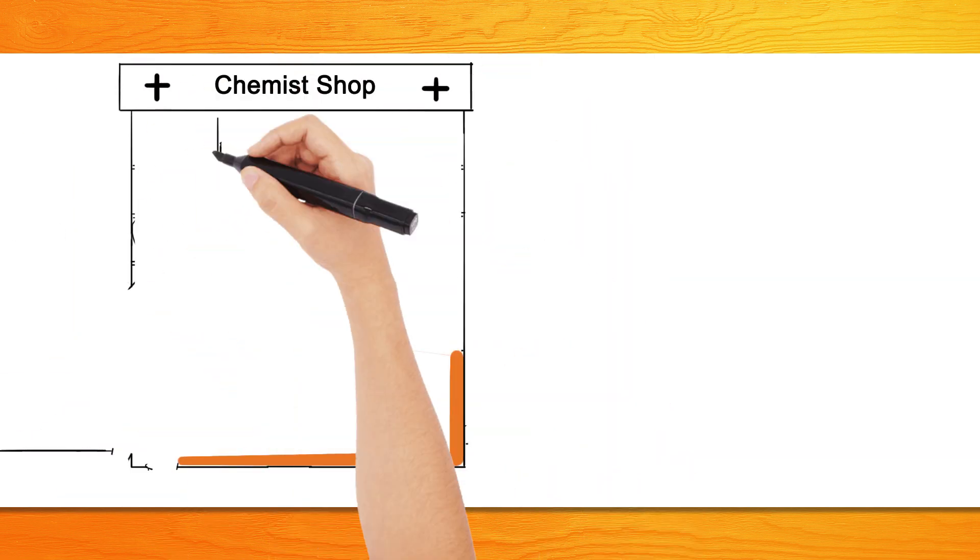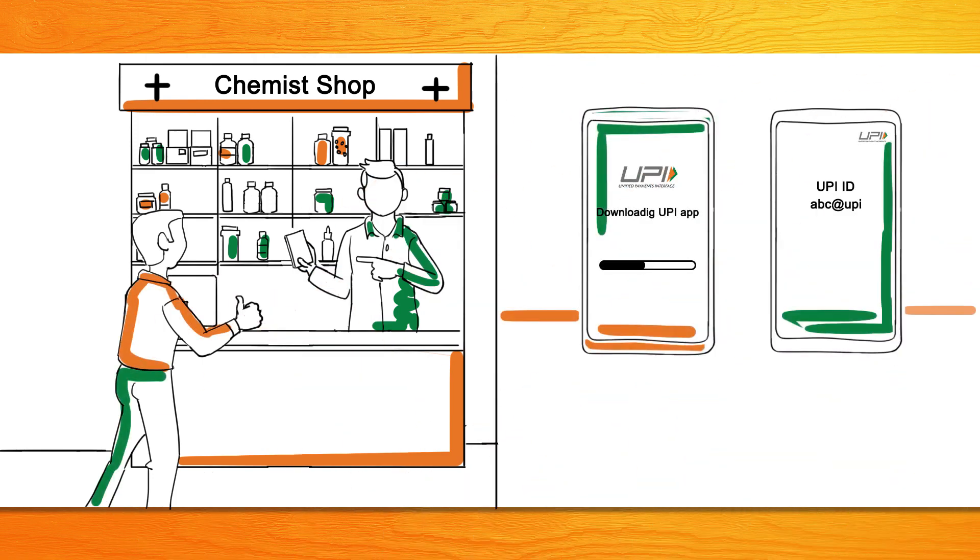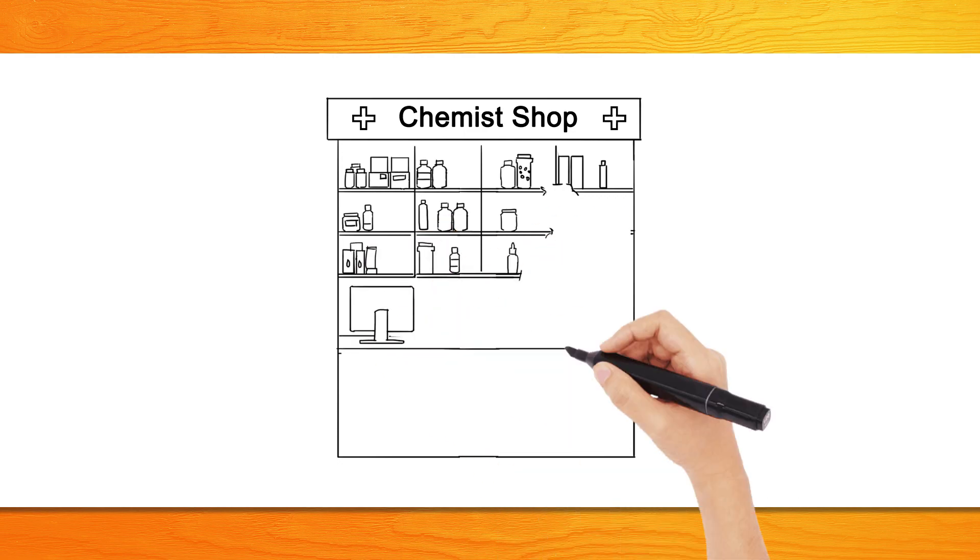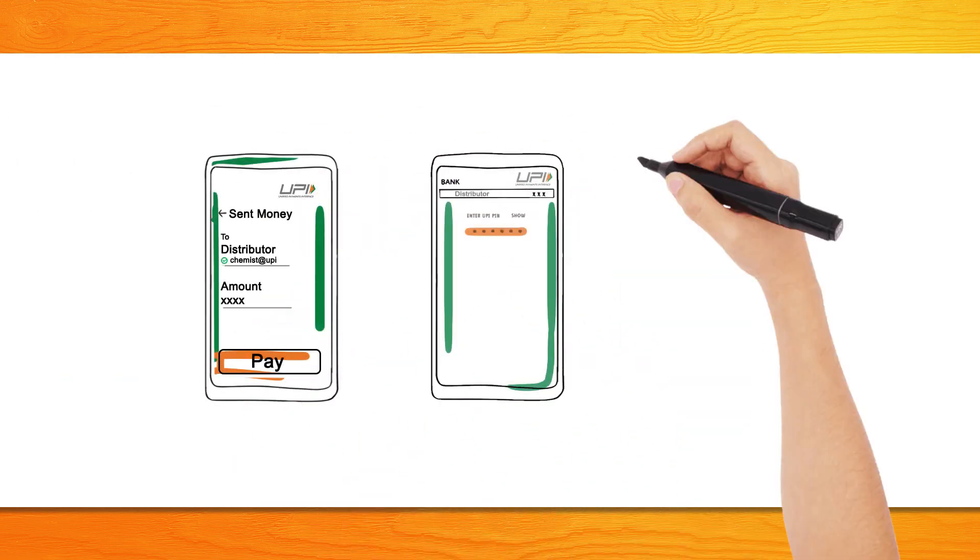The feet on street helps the chemists to download the UPI app and create their own UPI ID. The chemists can now make payments for pharmaceutical products to the distributor through the chemist UPI ID.